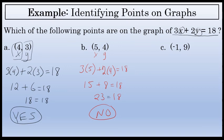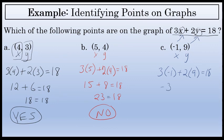Finally, let's test the point (-1, 9). Is (-1, 9) a point on this graph? We'll substitute a negative 1 for x and a 9 for y and see if that equals 18. Substituting a negative 1 for x and a 9 for y results in 3 times negative 1 plus 2 times 9. 3 times negative 1 is negative 3, and 2 times 9 is 18. Negative 3 plus 18 is 15, which does not equal 18. So no, the point (-1, 9) is not on the graph of 3x plus 2y equals 18.